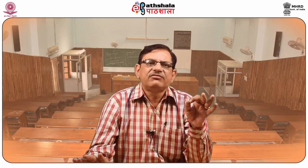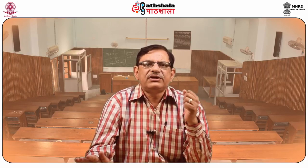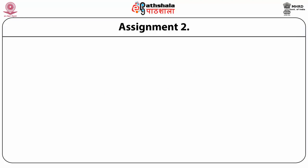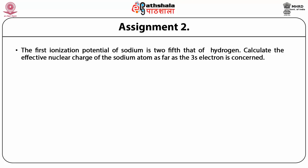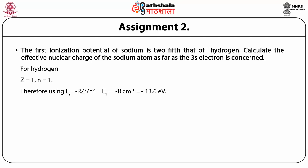Assignment 1: Calculate the Rydberg denominator for the first term value of the principal series of sodium. The wave number of the transition is 16973.7 cm⁻¹ and R for sodium is 109734 cm⁻¹. We write the spectral term T = R/nₑ², so nₑ² = R/T = 109734/16973.7, which gives nₑ² equal to approximately 6.464, so nₑ ≈ 2.54.